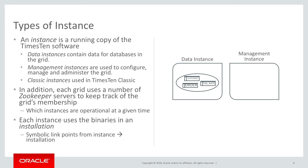In X10 Scale-out, in a single grid, there are two types of instances. An instance is a running copy of the X10 software. There are data instances and management instances. Data instances contain data for databases in the grid — they are the ones that maintain those elements of databases. Management instances, on the other hand, don't store data for databases. Management instances are used to configure, manage, and administer the grid. Those management instances are kind of the boss of the data instances — they configure them, set them up, tell them what to do.